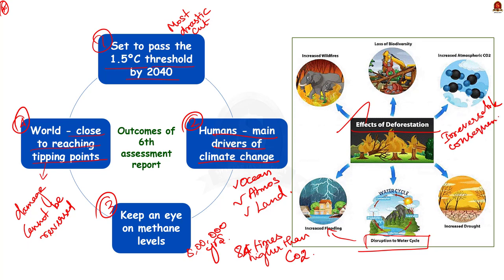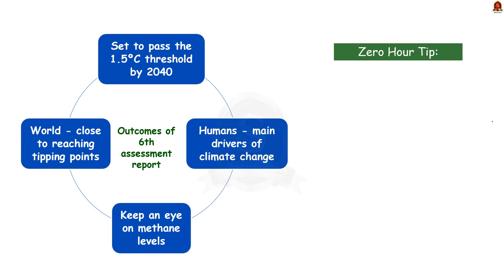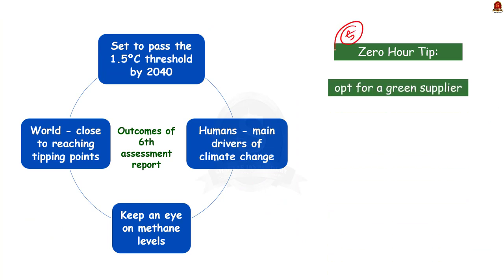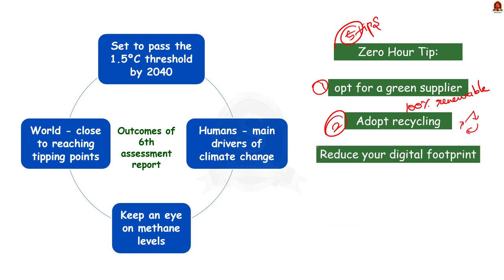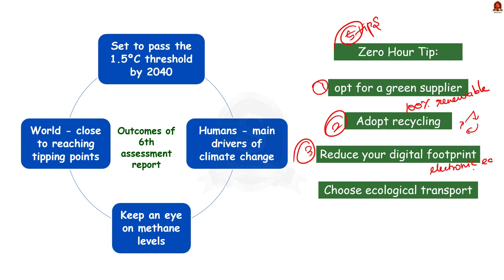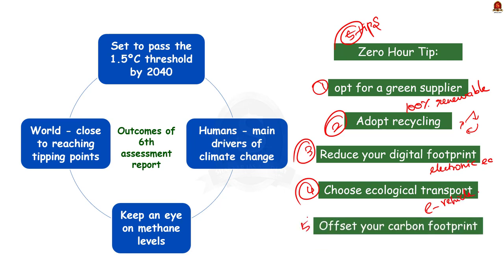The report also mentioned five tips to limit the impacts. First, opt for a greener supplier — turn your energy supply 100% renewable. Second, adopt recycling of all sorts of items including glass, paper, cardboard, aluminium, and plastic. Third, reduce your digital footprint by limiting the carbon footprint linked to the use of your electronic equipment. Fourth, choose ecological transport by opting for public transport or an e-vehicle. Finally, offset your carbon footprint — the total amount of greenhouse gases generated by your actions.